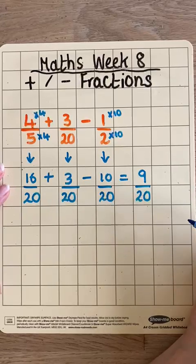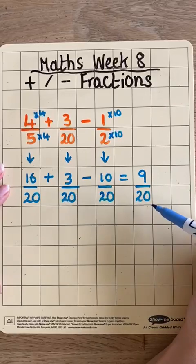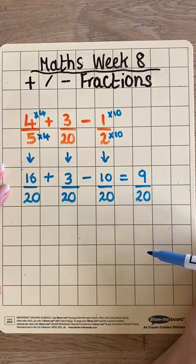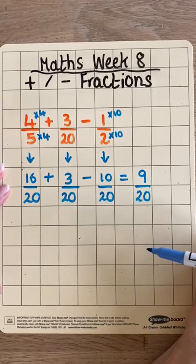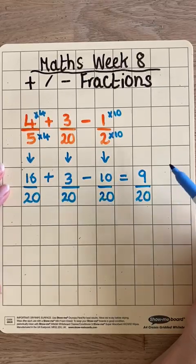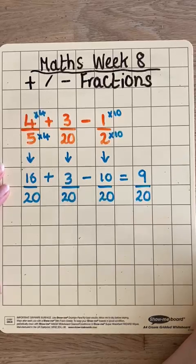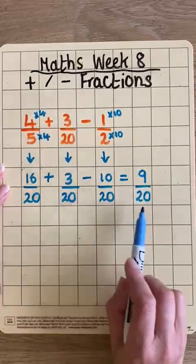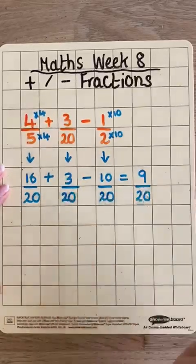The key to adding and subtracting fractions with different denominators is find a single denominator using the common denominator and change the other fractions into equivalent fractions with that denominator. Once they're all the same, we can add and subtract as normal.